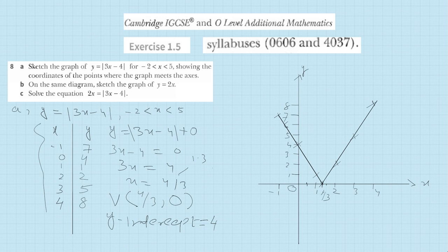The y-intercept is where the line cuts the y-axis — you can see the y-intercept is 4, and the vertex is (4/3, 0). Now come to part (b): on the same diagram, sketch the graph of y = 2x. For y = 2x we need to plot points, so let's make a table of values for x and y.